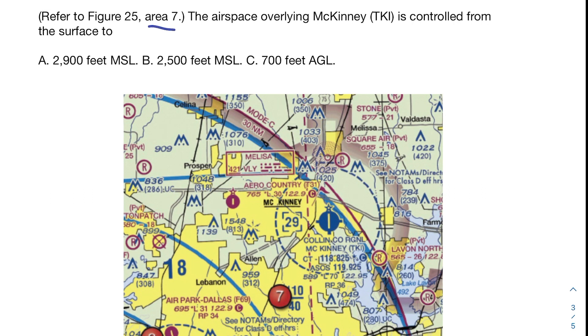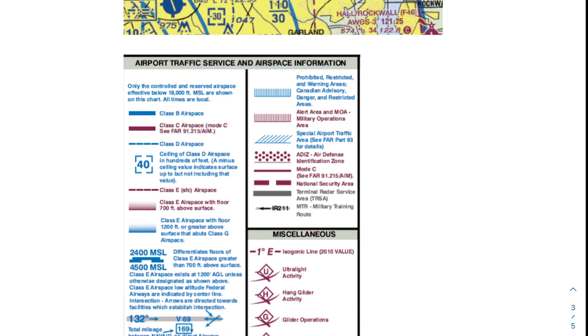If you answered that this is a Class D airspace, you're exactly correct. With Class D, we've got this dashed blue line around it. Within our sectional chart legend, it tells you what each class of airspace looks like, and that exactly matches up with Class D airspace. So if you got that right, give yourself a little pat on the back.